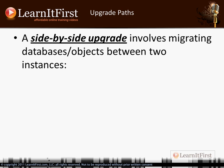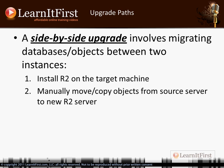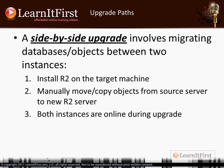A side-by-side upgrade is when you don't necessarily want to upgrade the entire instance, or when you want to upgrade to a new computer. This involves migrating objects between two instances. You go to your target machine — maybe it's a new server, maybe it's not — you install R2, and then you manually move or copy objects from the source to the destination. An object could be a table, a database, a job, or a login. That generic term 'object' covers many different areas.